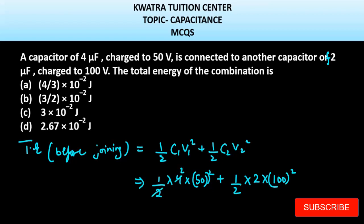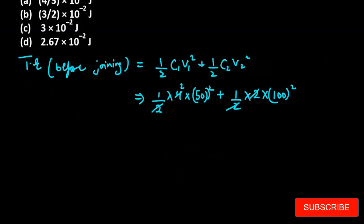2 from 4 cancel, you get 2. 2 from 2 cancel, you get 100 square. Here we have to see what value is, 2 into 50 square, which is 2500. Here we have to see what value is, 100 square is 10000. Final answer is 5000 plus 10000, which will be 15000. And if we have to write it in joules, then it will be 1.5 into 10 to the power minus 2 joules.